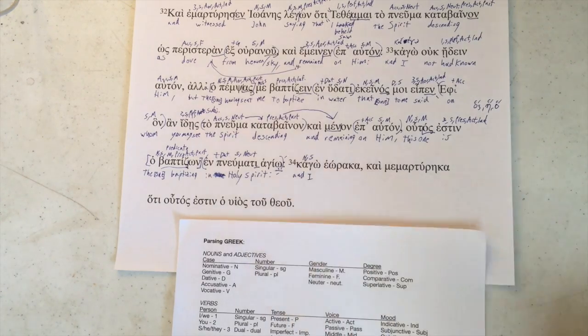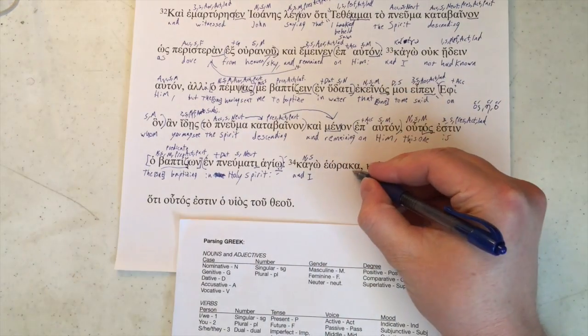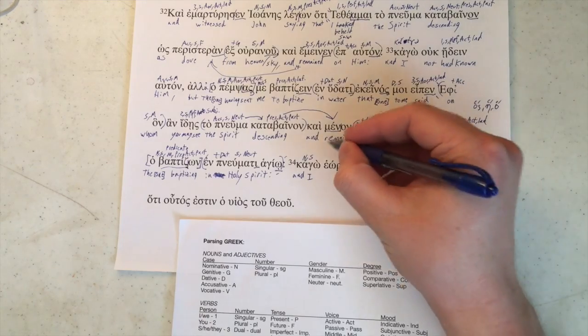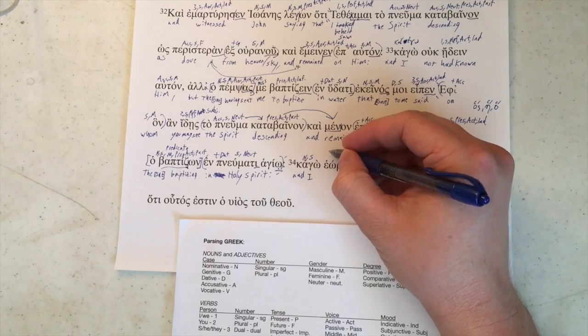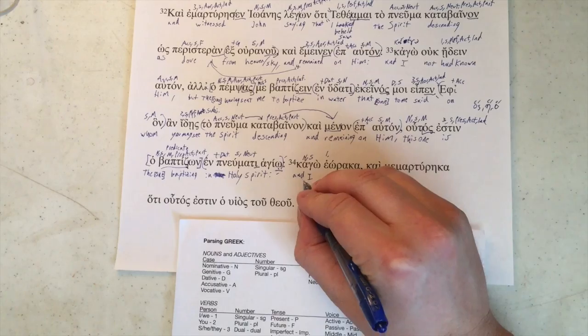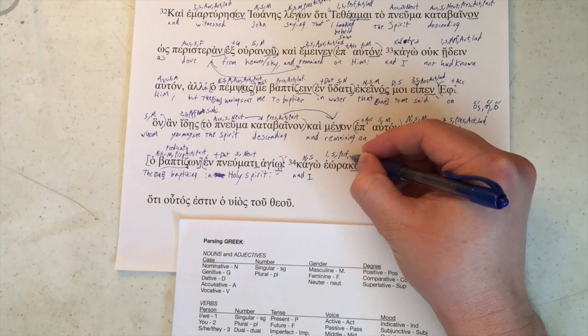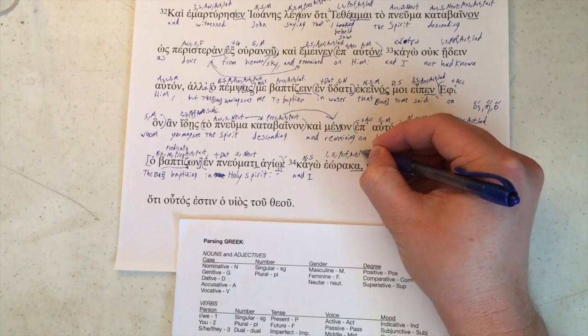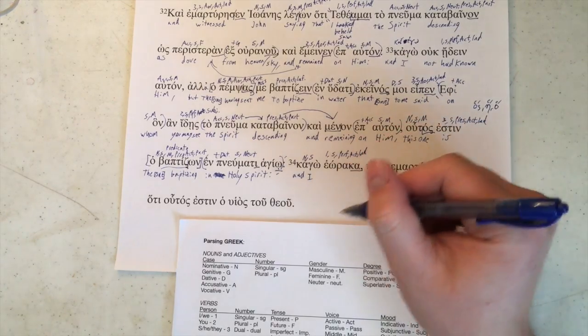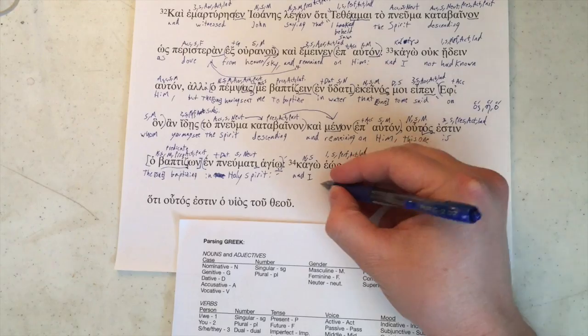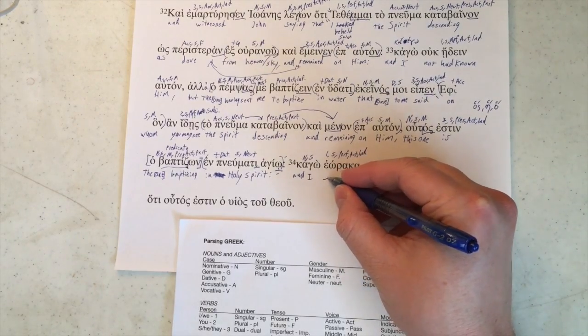Heo raka is our verb. This one is, since we've got the Kappa Alpha here, it is our first person, which would make sense with ego. Singular, perfect, active, and indicative. Ra'o opsumai eidan heo raka. Yep. I saw.